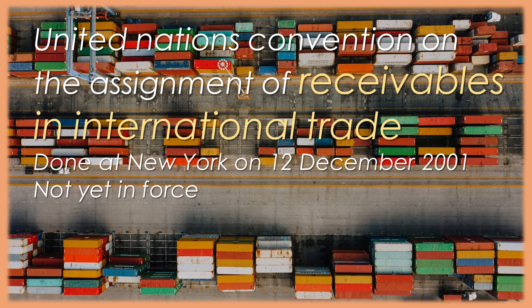Article 41. Other Exclusions. 1. A state may declare at any time that it will not apply this convention to specific types of assignment or to the assignment of specific categories of receivables clearly described in a declaration. 2. After a declaration under paragraph 1 of this article takes effect: a. this convention does not apply to such types of assignment or to the assignment of such categories of receivables if the assigner is located at the time of conclusion of the contract of assignment in such a state; and b. the provisions of this convention that affect the rights and obligations of the debtor do not apply if, at the time of conclusion of the original contract, the debtor is located in such a state or the law governing the original contract is the law of such a state. 3. This article does not apply to assignments of receivables listed in Article 9, Paragraph 3.